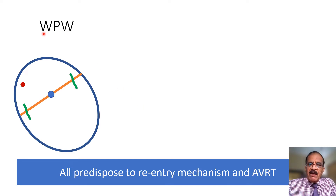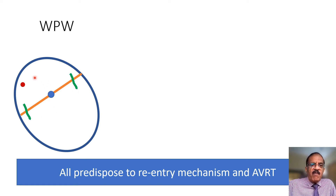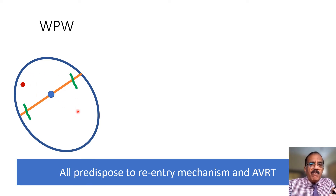In Wolf-Parkinson-White syndrome, this diagram shows the structure of the heart. Normally electric current cannot travel from atria to ventricle except through the AV node, but in WPW there is an anomalous pathway allowing current from the atria to leak into the ventricle without going through the AV node. Current will also pass through the AV node, but the initial portion leaks via the anomalous pathway.